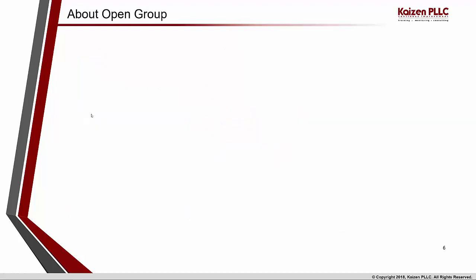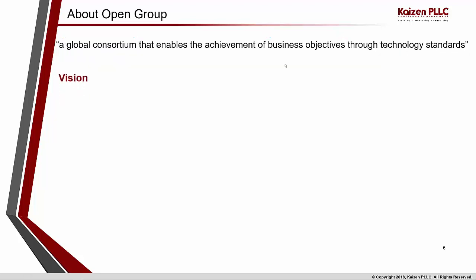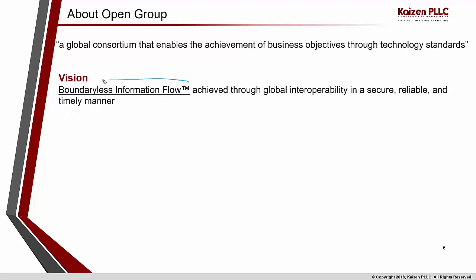Let's move along — what about the Open Group? The Open Group is a global consortium, which means it is an organization that welcomes various other business corporations and organizations to become members. The goal of the Open Group is to achieve the business objectives of those member organizations through various technology standards — of course, TOGAF is one among them. The vision of the Open Group is boundaryless information flow.